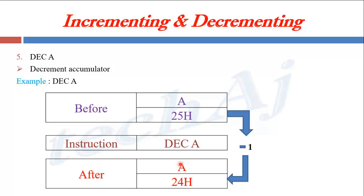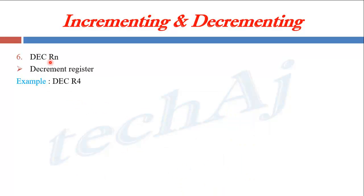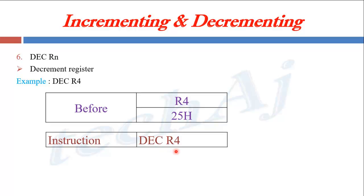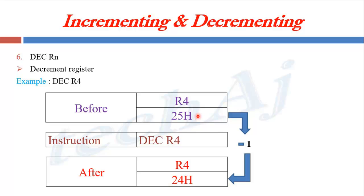And the accumulator will become 24H. For DEC Rn, if register R4 has the value 25H, the instruction DEC R4 will decrement R4 by 1 and R4 will become 24H.